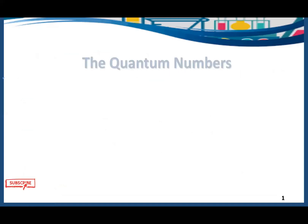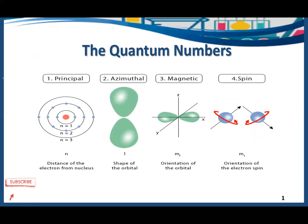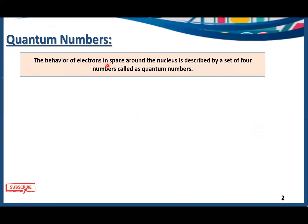Today the topic of our discussion is quantum numbers. There are four total quantum numbers: principal, azimuthal, magnetic, and spin quantum number. The behavior of electrons in space around the nucleus is described by a set of four numbers, and these four numbers are actually called quantum numbers.